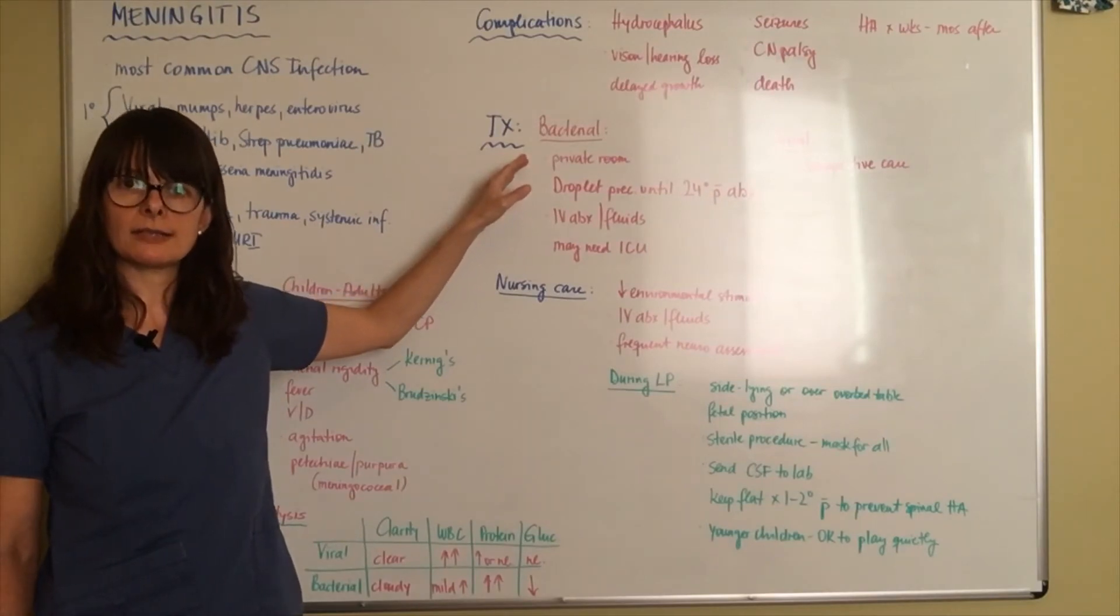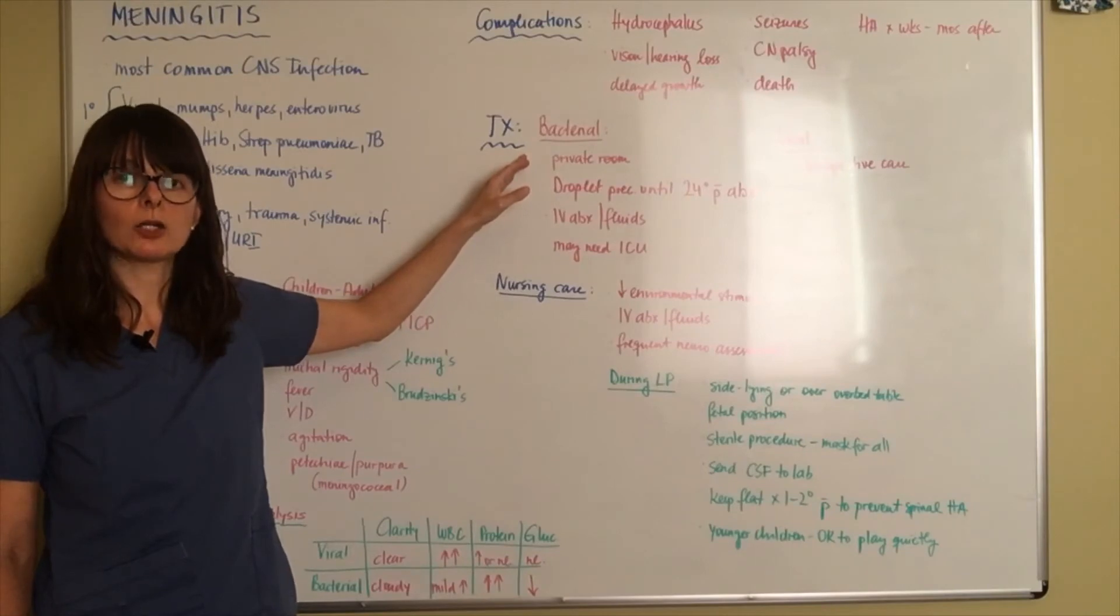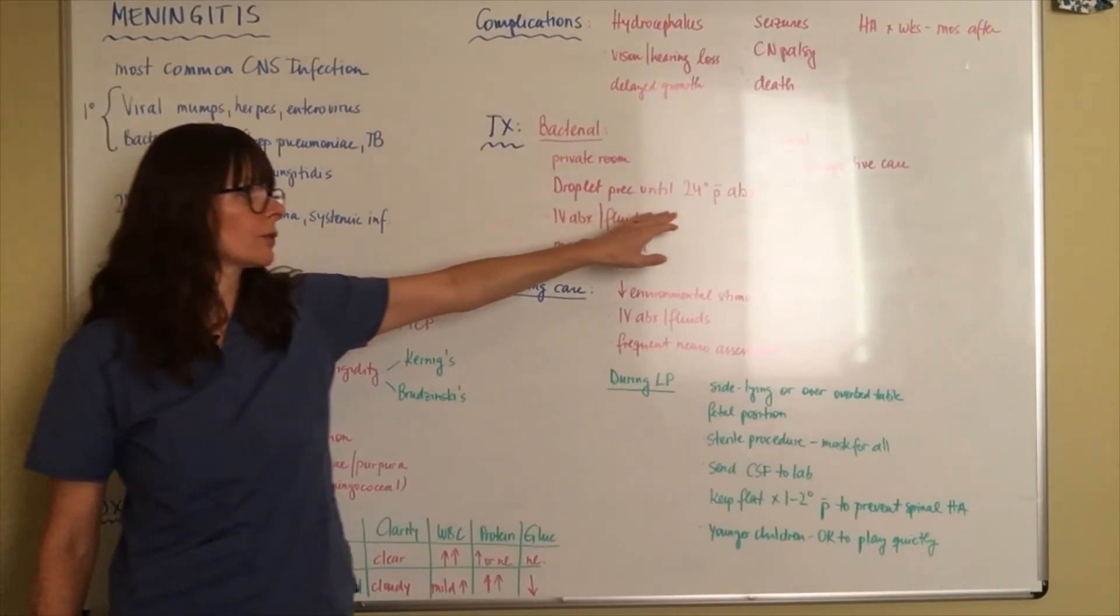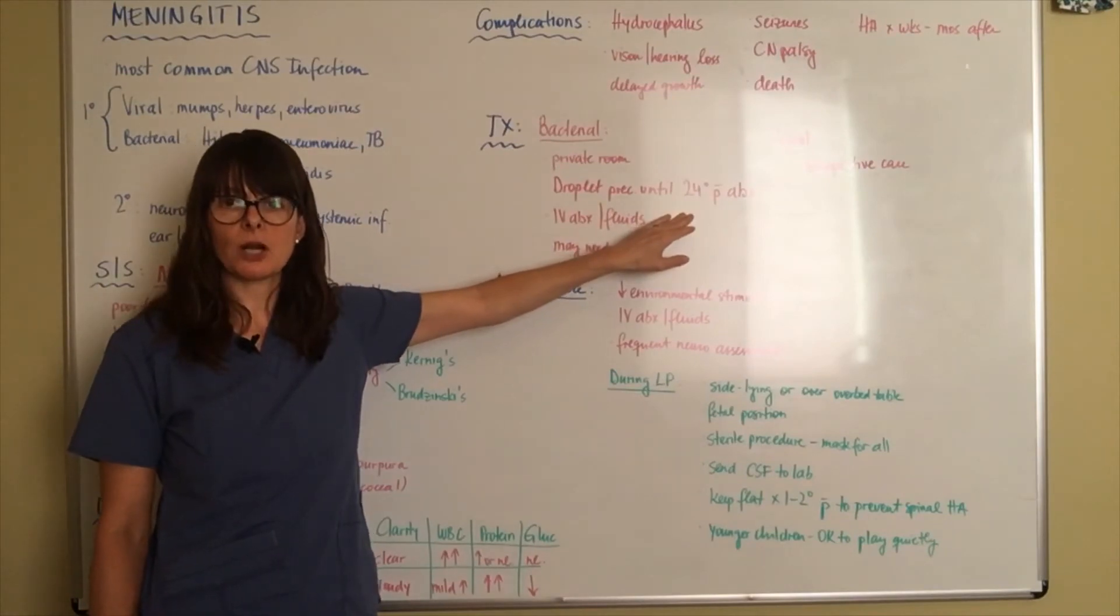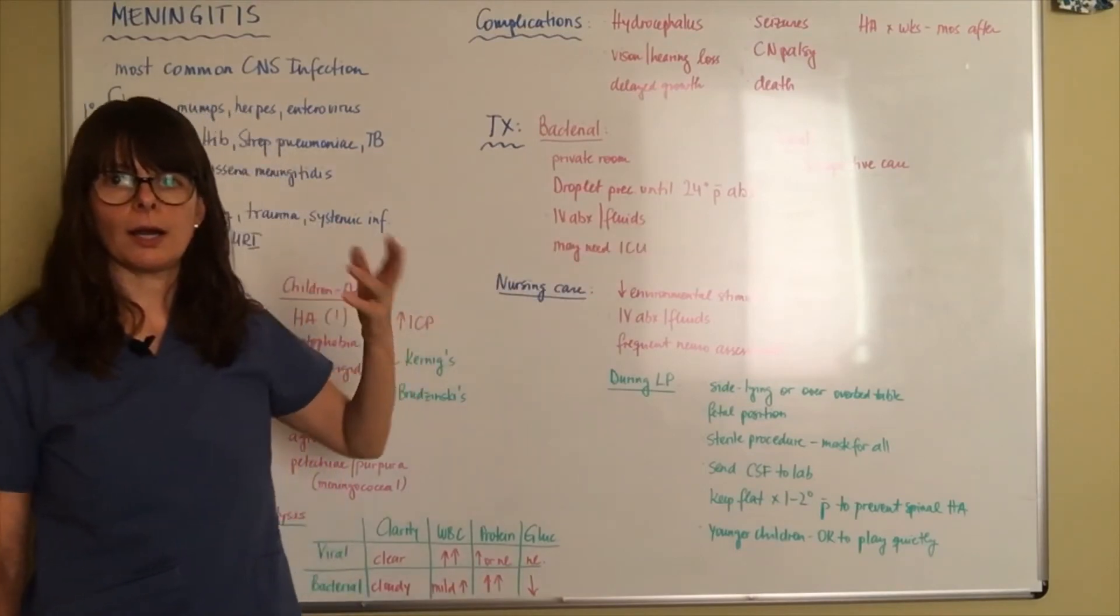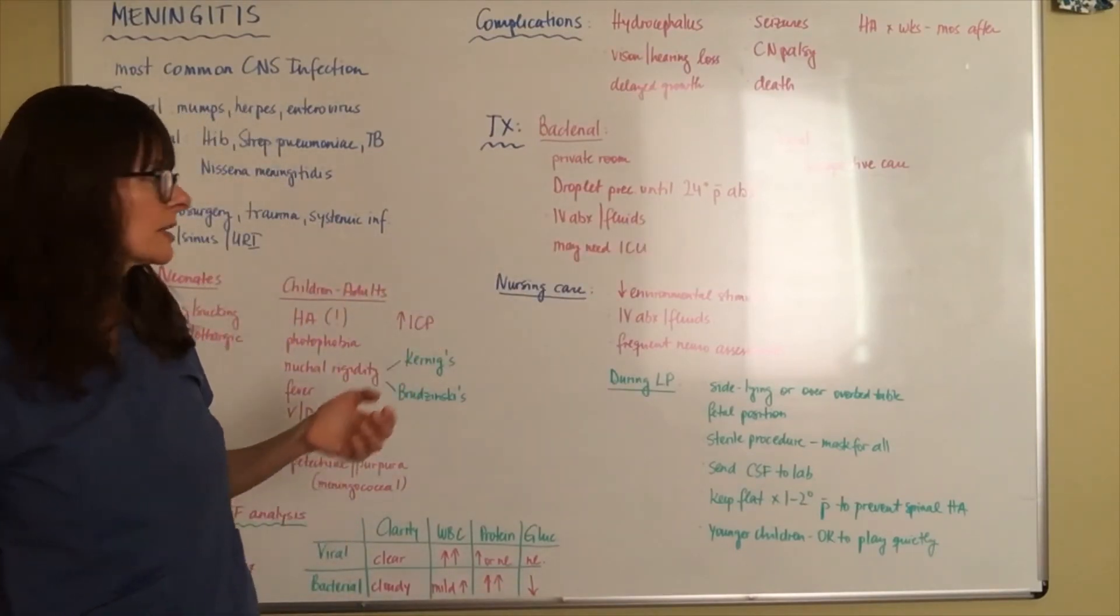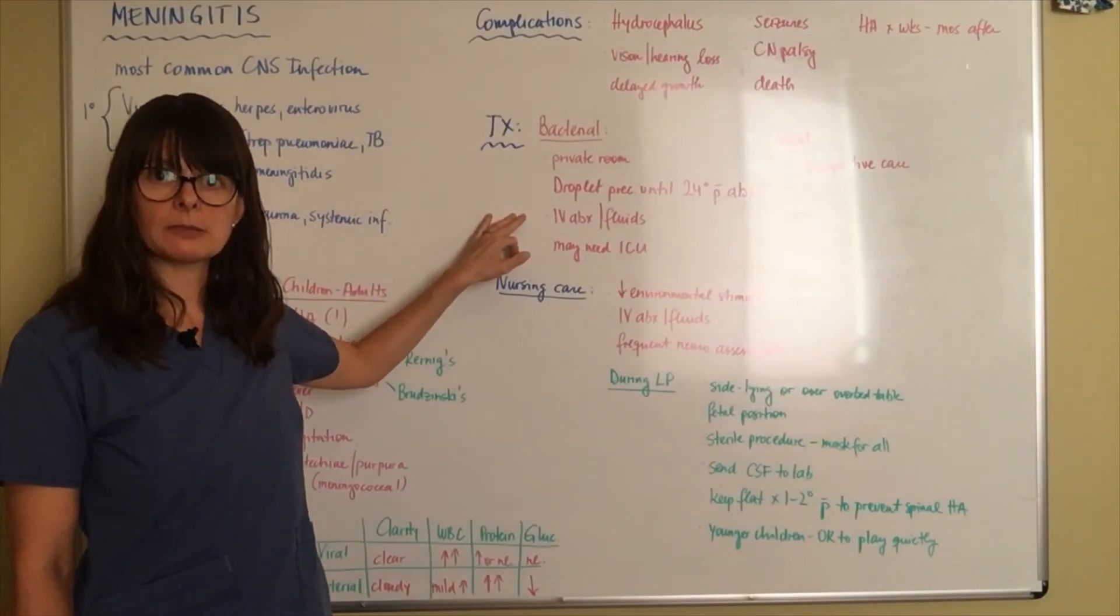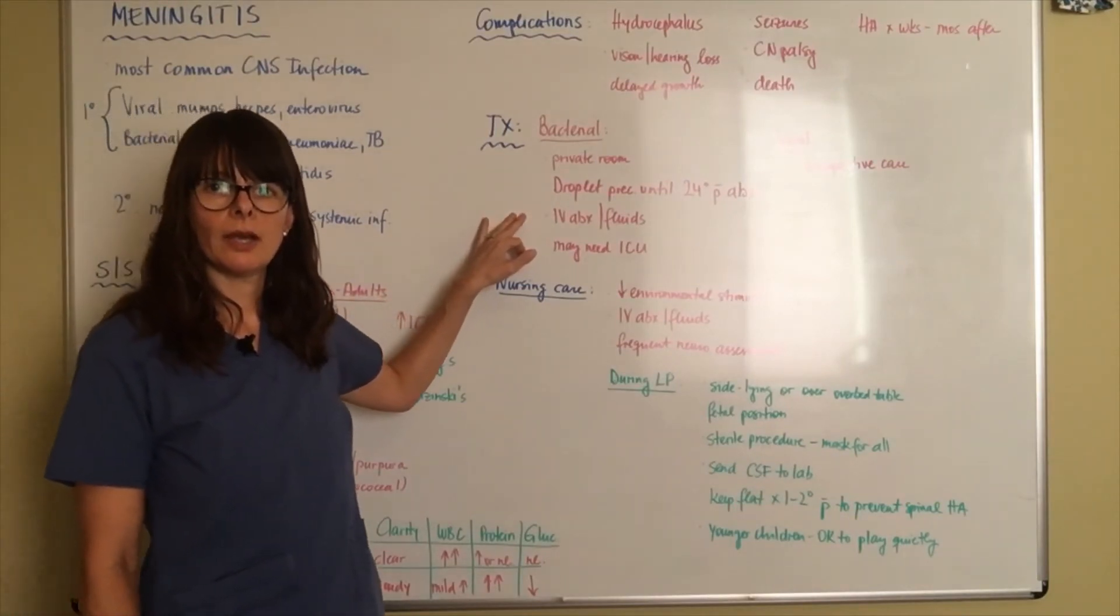For treatment, if it's bacterial we want to isolate the patient because this is highly contagious. The patient will be placed in a private room on droplet precautions until 24 hours after the antibiotics are started. But for the most part hospitals will keep the patient isolated for maybe even the duration of their stay.